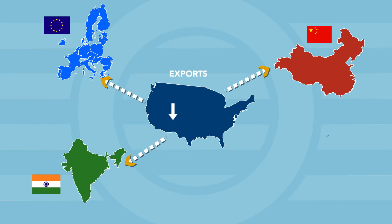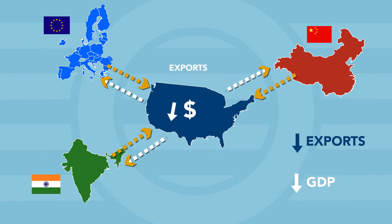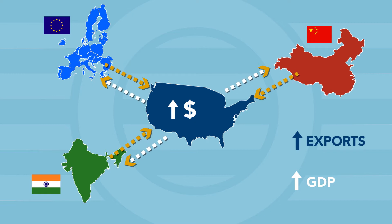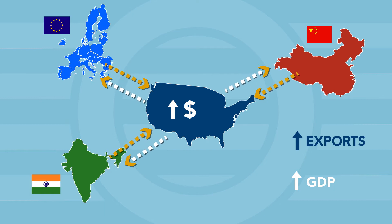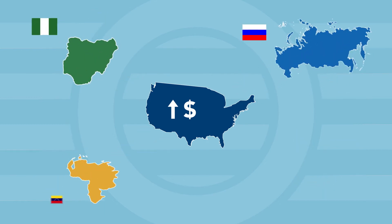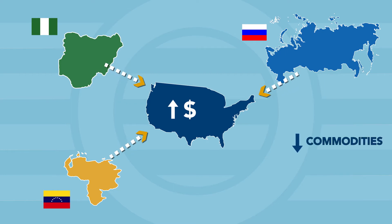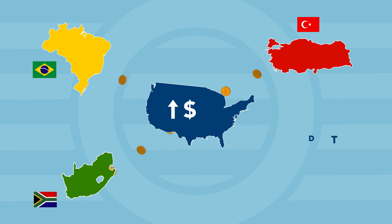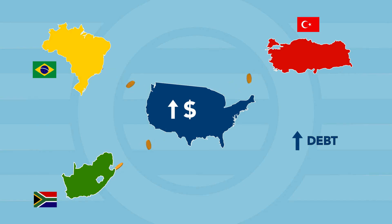Major economies can benefit as the cost of exports to the U.S. fall, and U.S. goods become more expensive and less competitive globally. We may then see GDP growth in these countries. It's not such good news for developing nations. A higher Fed funds rate lowers demand for commodities, which in turn lowers their prices. National debt can also increase as the dollar strengthens, making it more difficult to repay. This can mean lower economic growth and higher debt for these countries.